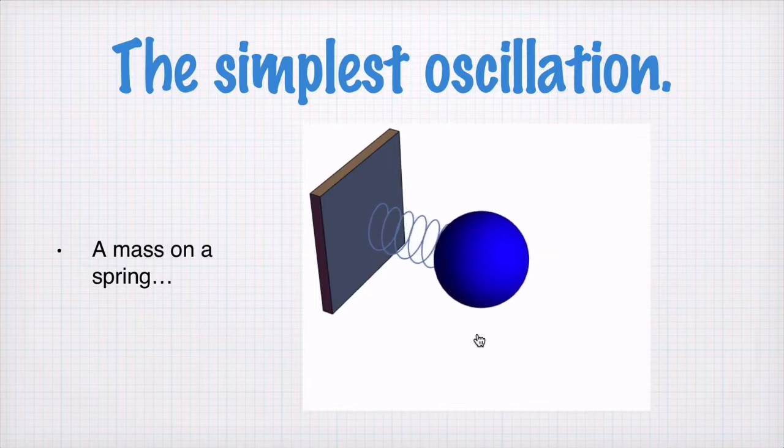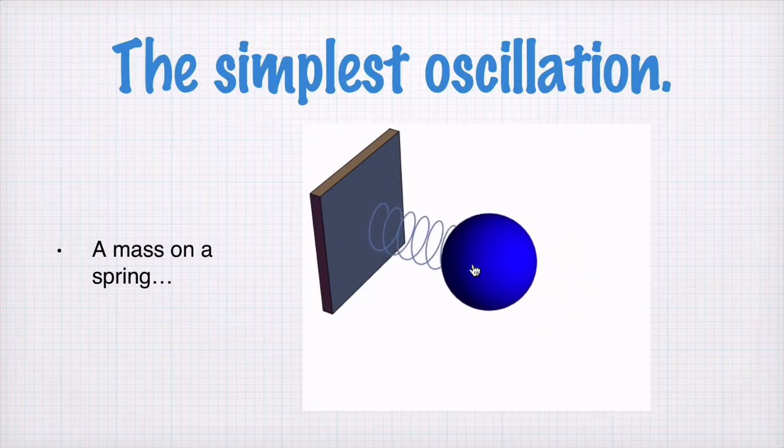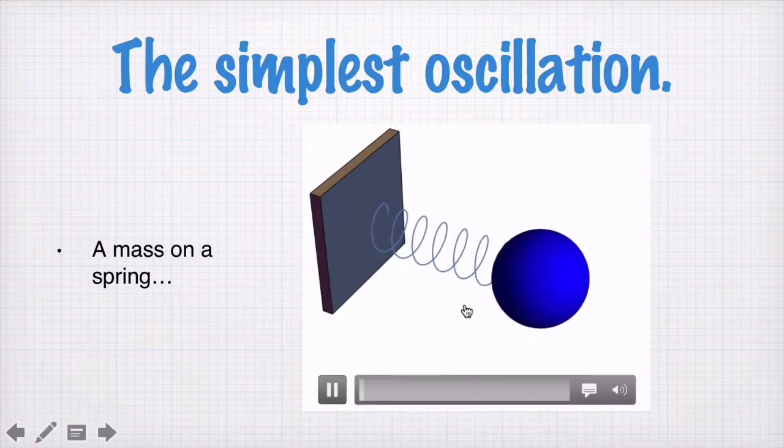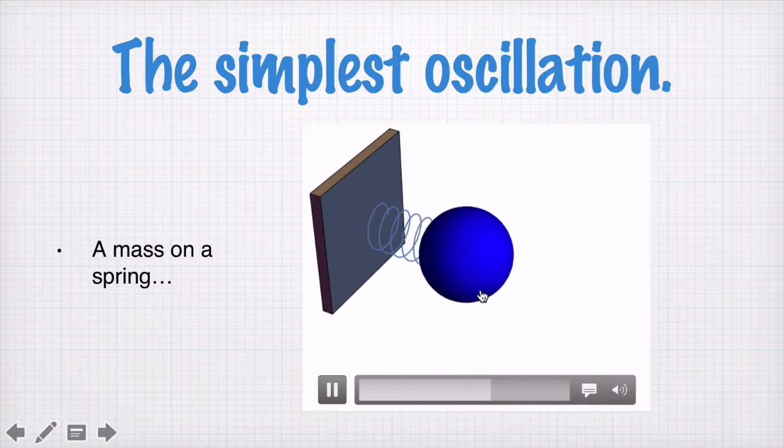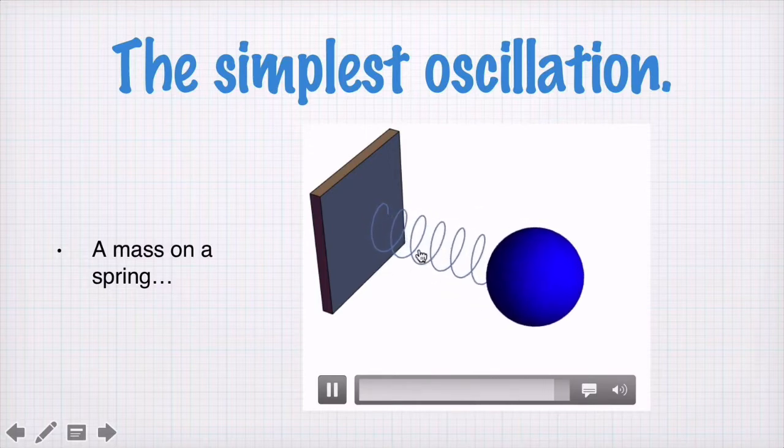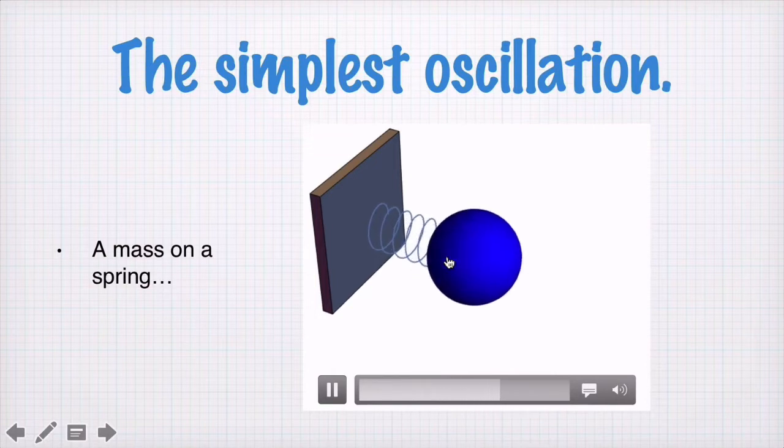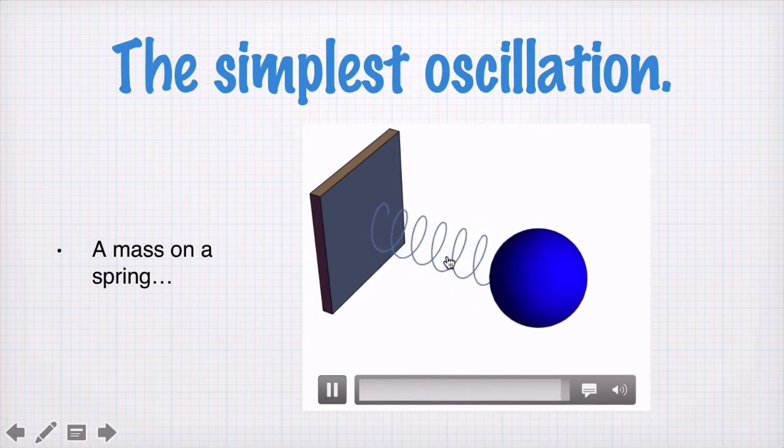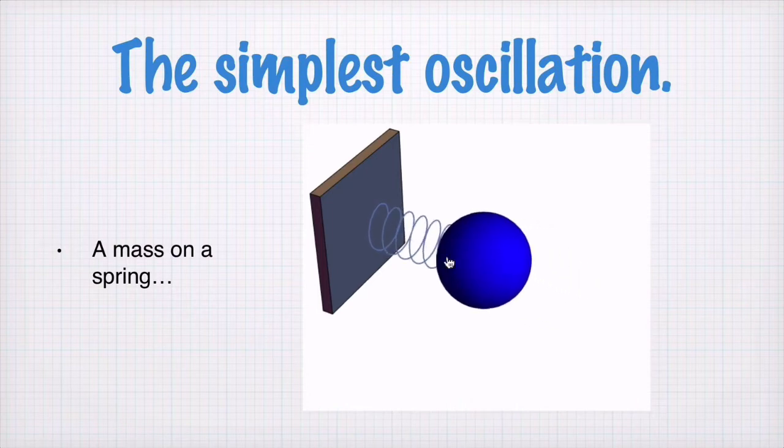The other thing which is important is there are two forms of energy here. There's the kinetic energy of this mass, and the potential energy stored in the spring. And the energy is sloshing between these two forms of energy. When the kinetic energy here is maximum, the potential energy here is zero. And when the potential energy in the spring is maximum, the kinetic energy here goes to zero. This is a common feature of oscillators, that you have two forms of energy, and you're converting between the two. The rate of this conversion is to do with the frequency of the oscillation.